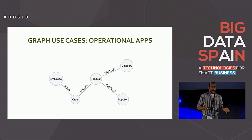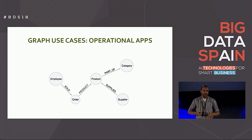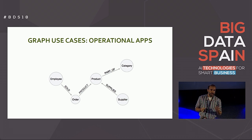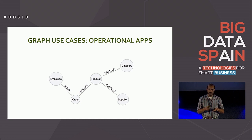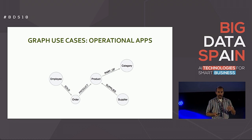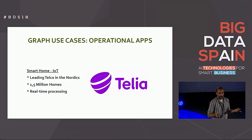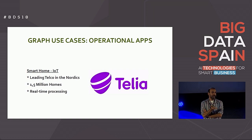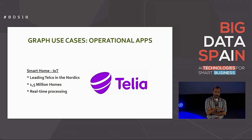This is one of the key motivations for the first use case for graph databases: operational applications. If your application has a model that can be reflected as a graph, it can be easier to model and faster to execute when doing many hops. Here is the exact same Northwind model as a graph — no intermediate entities, simpler and faster in practice. Telia, the leading telco in the Nordics, has built an application for smart homes using IoT, deployed in 1.5 million homes, built on a graph database.